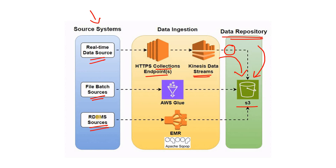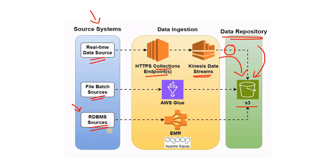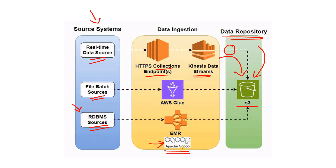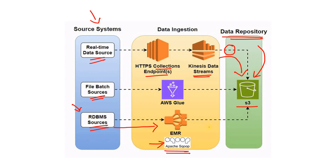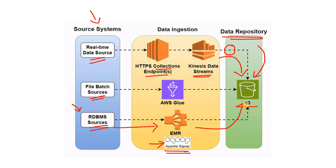Another very popular source is RDBMS, where data is sitting in SQL databases like Oracle, SQL Server, etc. A very popular ingestion tool for this use case is Apache Sqoop. Using Sqoop, either in full refresh or incremental mode, we can pull data from tabular sources and ingest into S3 in different formats — Avro, Parquet, CSV, TSV, etc.